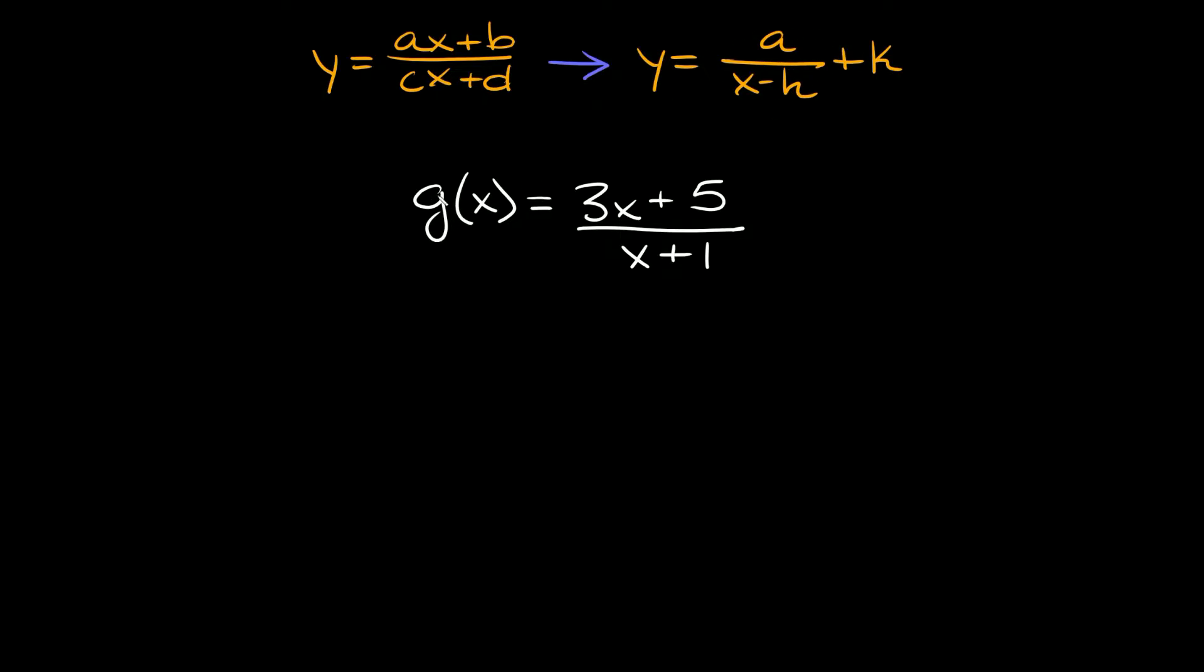So the first example we're going to start with is g of x is equal to 3x plus 5 over x plus 1. So in order to convert this into this form you just need to do some polynomial long division.